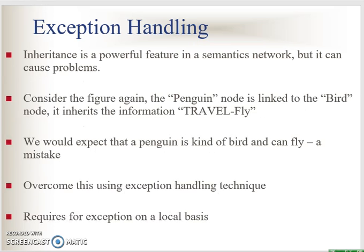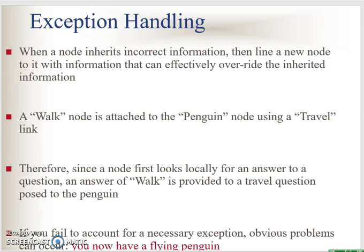So how about exception handling? We handle exceptions by introducing an object specifically for each object that doesn't inherit from its superclass. For example, the penguin travels by walking rather than flying. Since the first node looks locally for an answer to a question, an answer of 'walk' is provided to a travel question posed to the penguin. So if you ask canary or bird, they won't travel by walking.